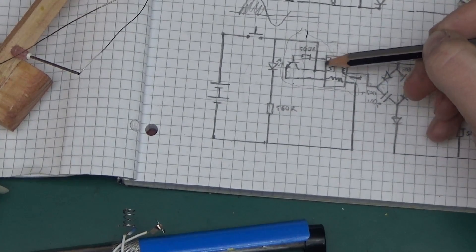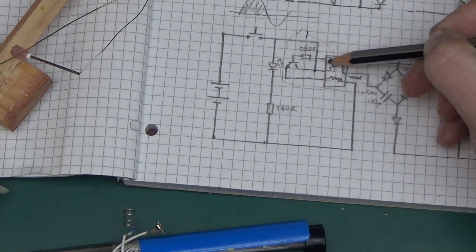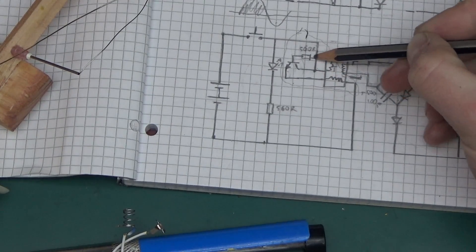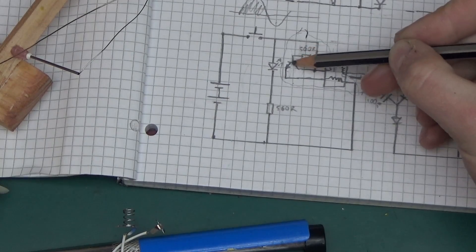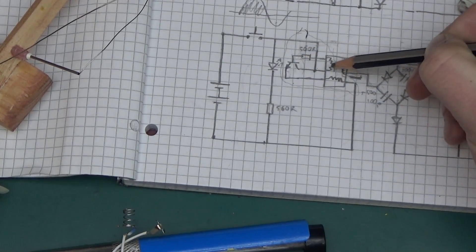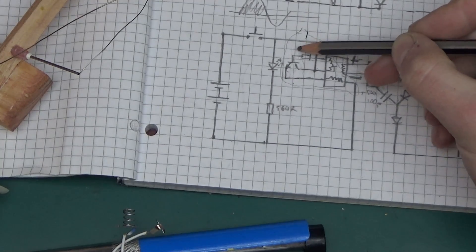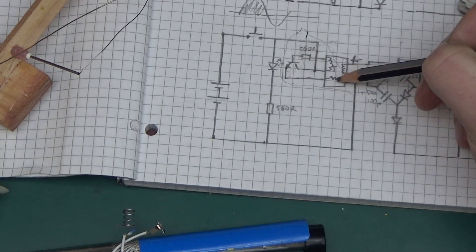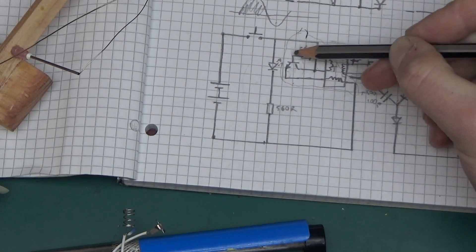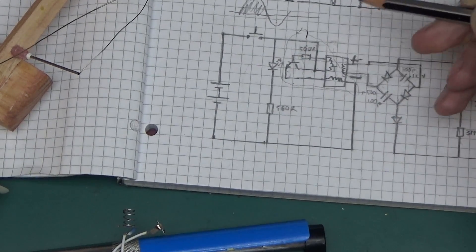This section here forms just a basic Joule Thief self-oscillating circuit that will keep oscillating. Positive comes through here and through the first coil and resistor, switches on the transistor. It starts conducting up until it saturates.